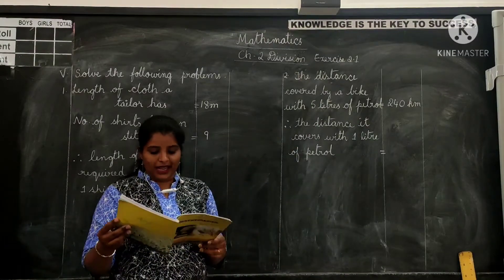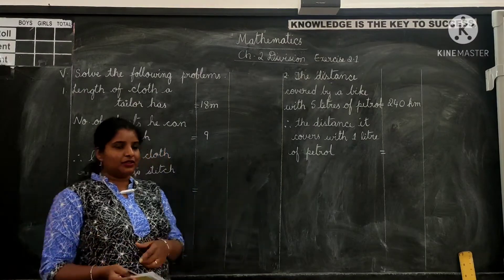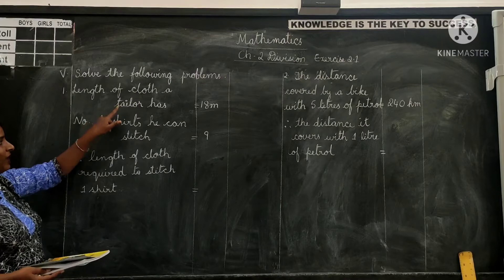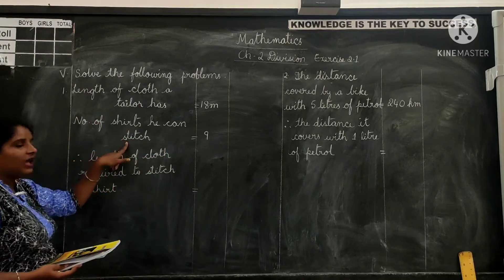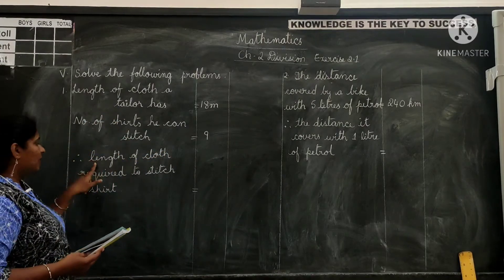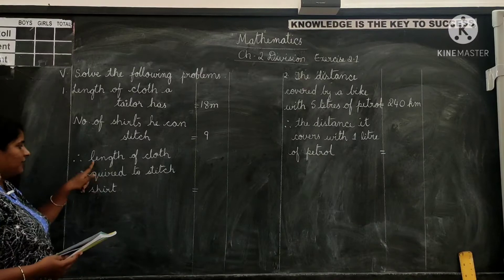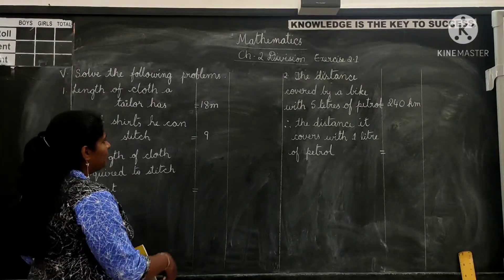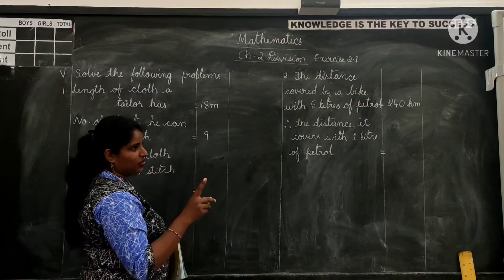Let us see the statements. We have the numbers here, 80 meters and 9. What is 80 meters? 80 meters is the length of cloth a tailor has, and 9 is the number of shirts he can stitch. Now we are supposed to find the length of cloth required to stitch 1 shirt. So here we can say to stitch 1 shirt.